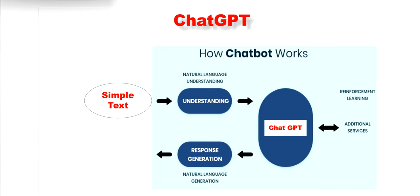You might be familiar with the term 'prompt' in ChatGPT. In the context of ChatGPT or similar language models, a prompt is referred to as the input or initial text provided by the user to generate a response. It is the text or query that you input into the model to get the relevant output. The prompt essentially serves as an instruction and a starting point for the language model to understand and generate the response.